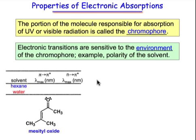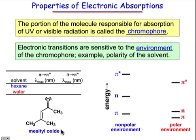and we can illustrate that for the molecule mesityl oxide, whose structure is shown here. Just like acetone, it has a pi to pi star transition as well as an n to pi star transition. We'll examine the absorbance, the lambda max, in both hexane and water.